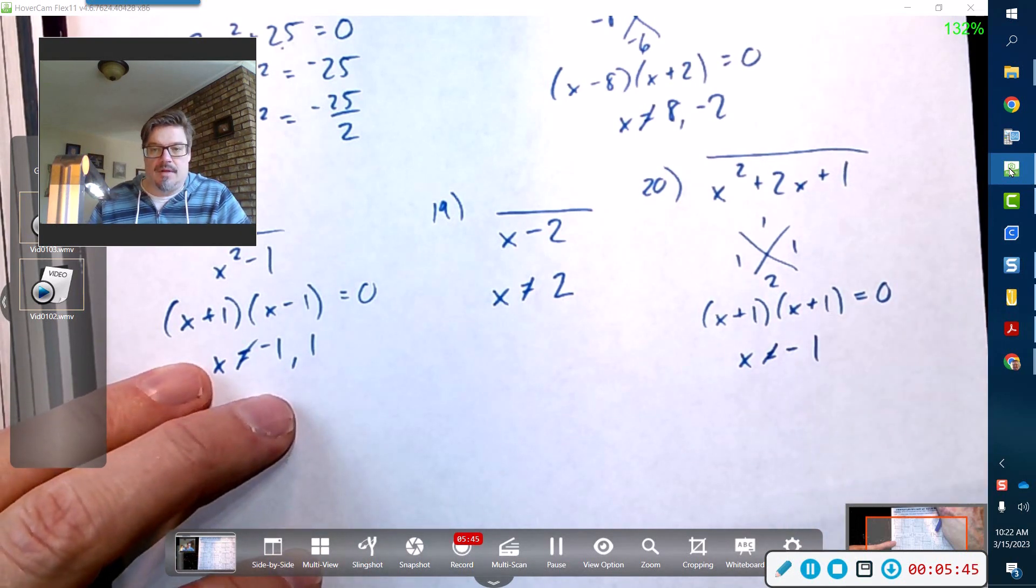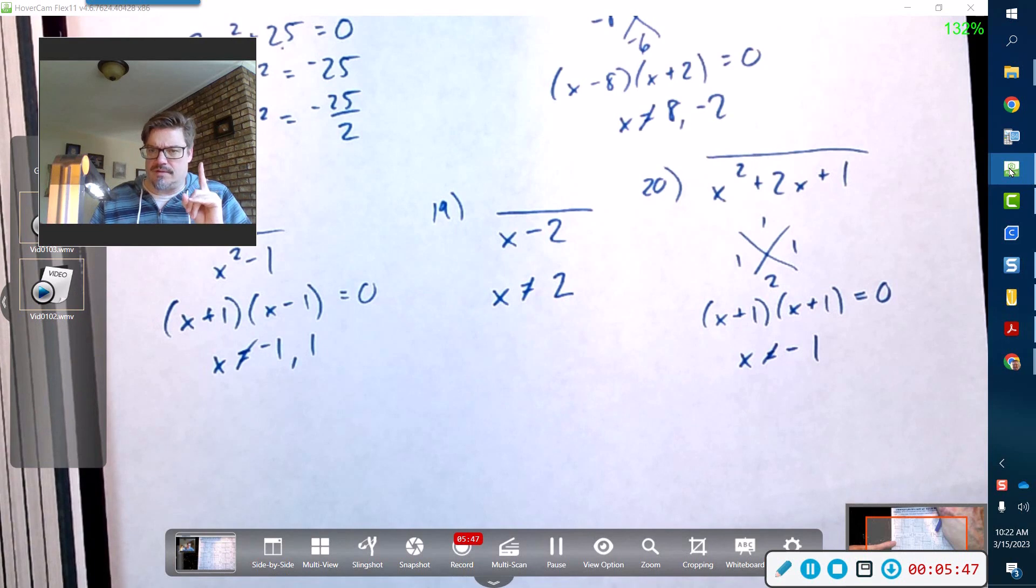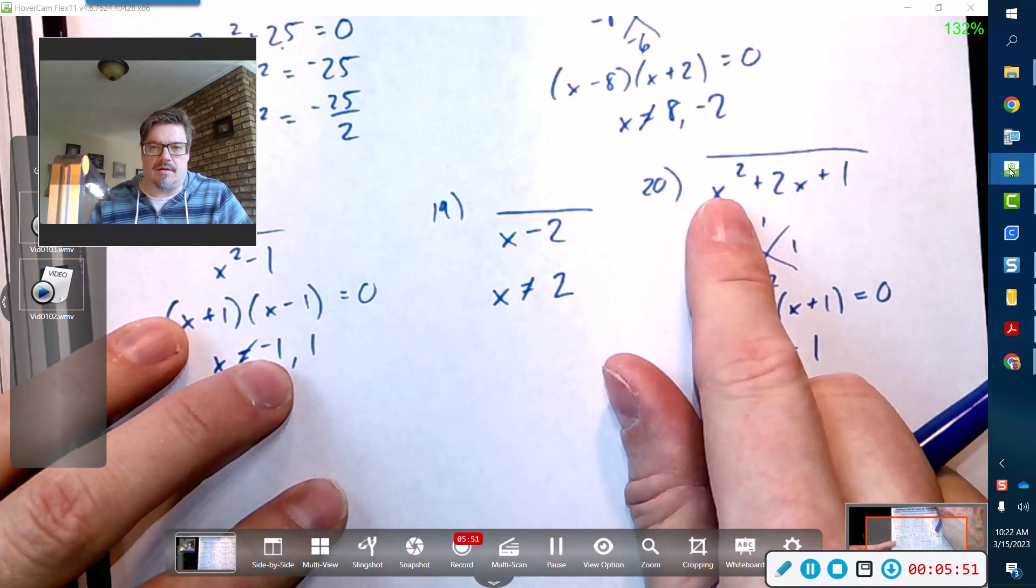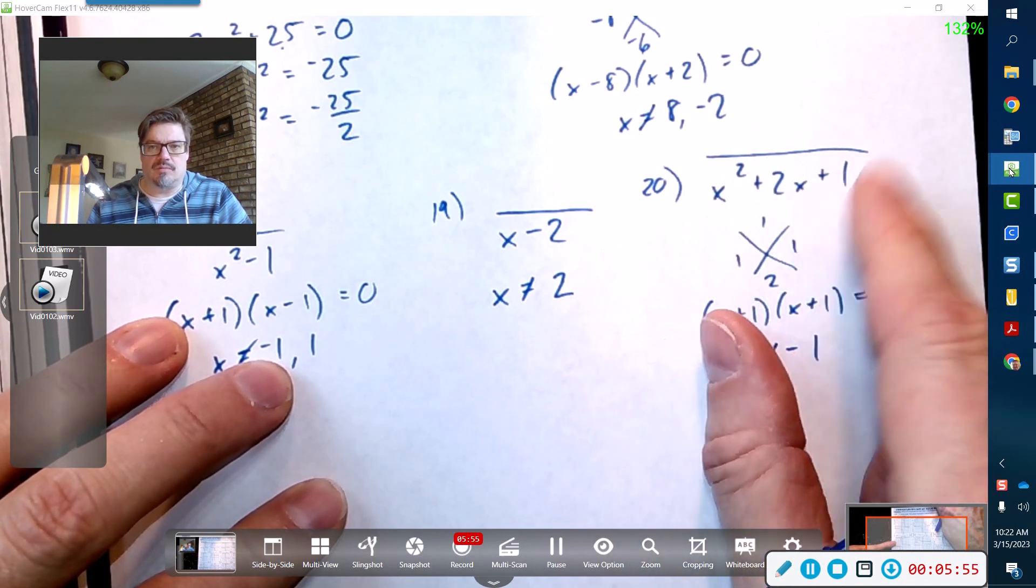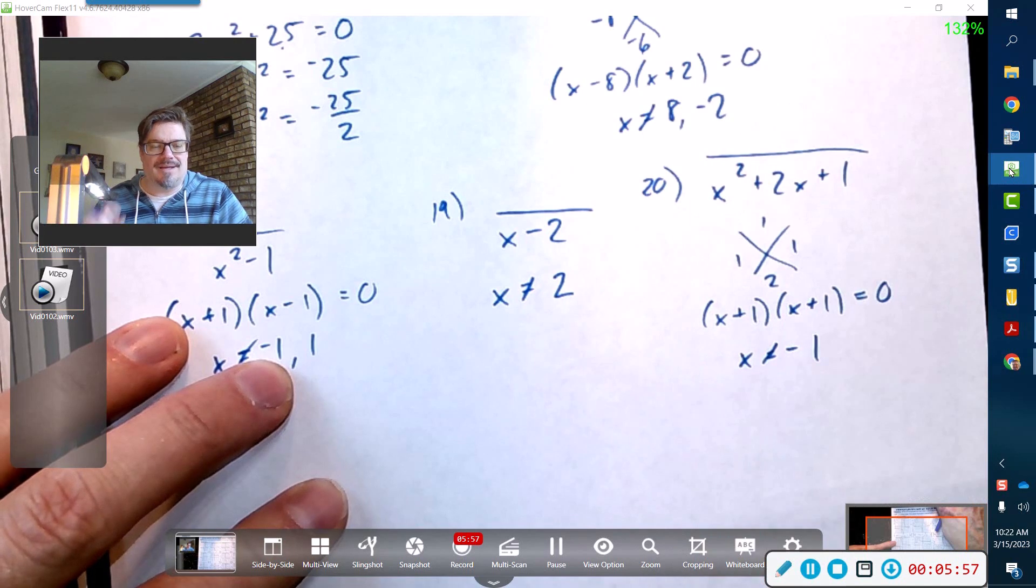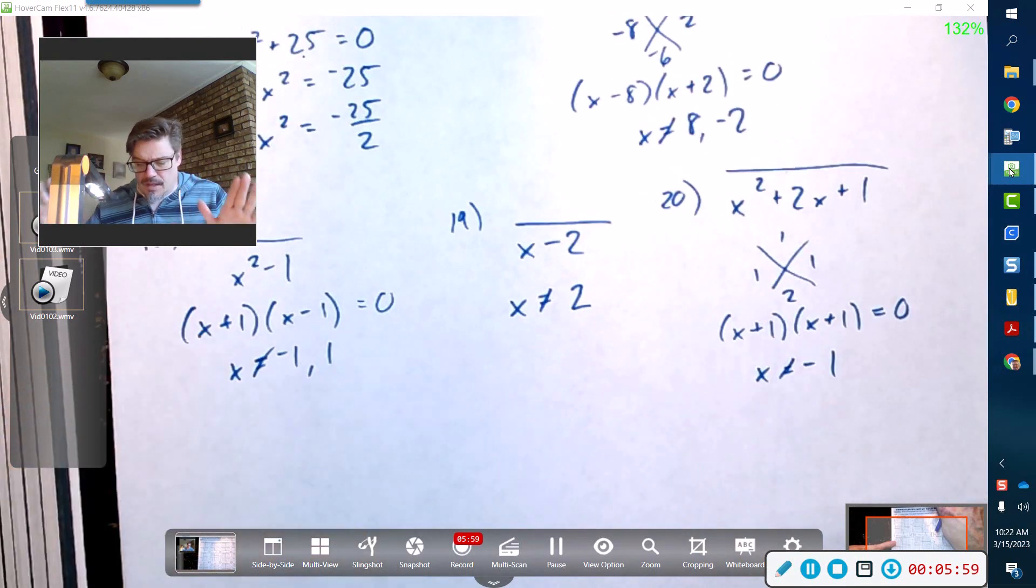So x cannot equal negative 1. You don't write negative 1 twice, just write it once. Notice if I plugged in negative 1 here, I'm going to get positive 1 plus negative 2 plus 1—that equals 0. I would be dividing by 0 if I plugged it in. If you're a computer programmer, that program would crash.